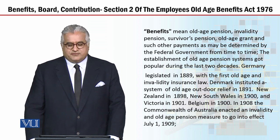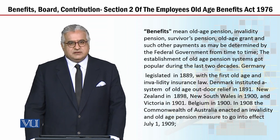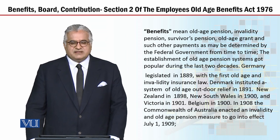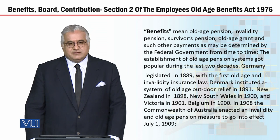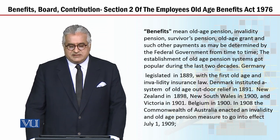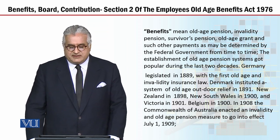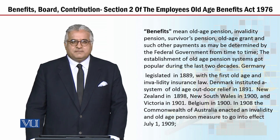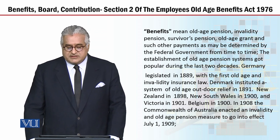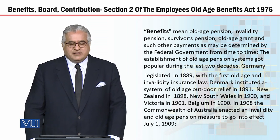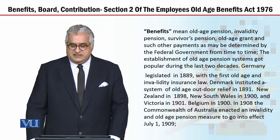The establishment of old age pension systems became popular during the last two decades. Germany legislated in 1889 and introduced the first old age and invalidity insurance law. Denmark instituted a system of old age outdoor relief in 1891, New Zealand in 1898, New South Wales in 1900, Victoria in 1901, and Belgium in 1900.